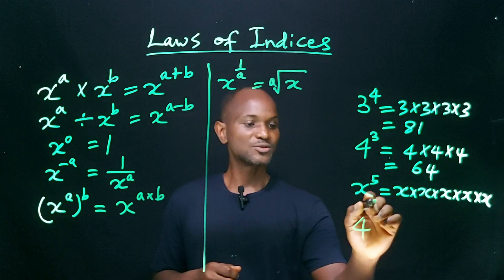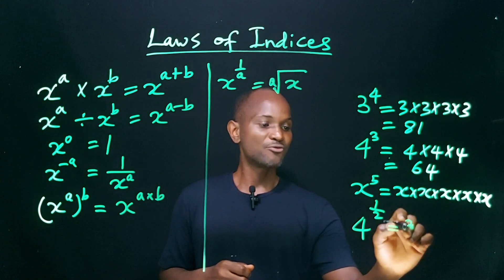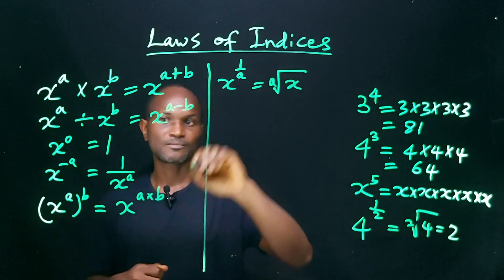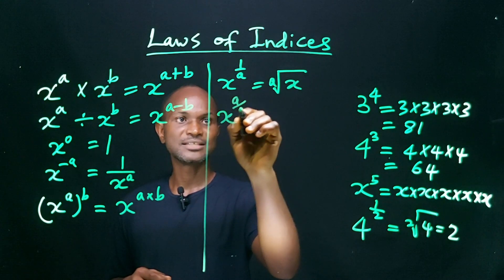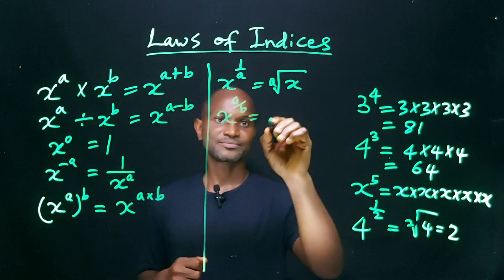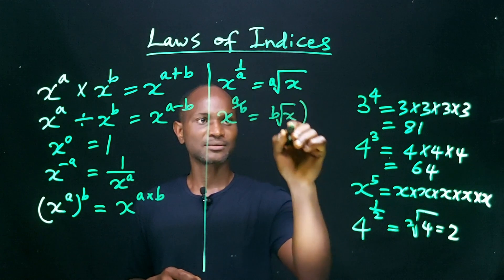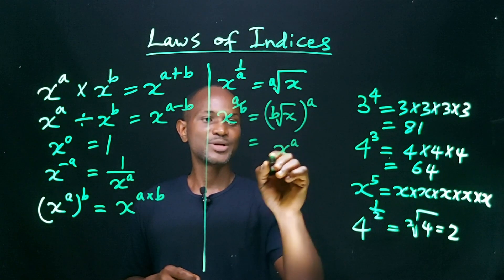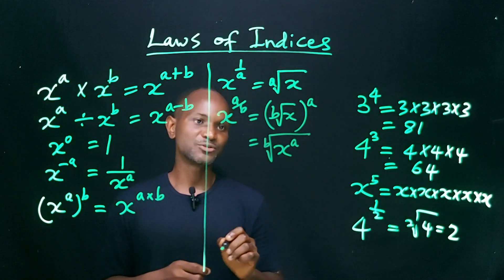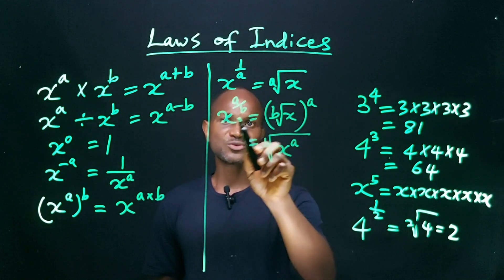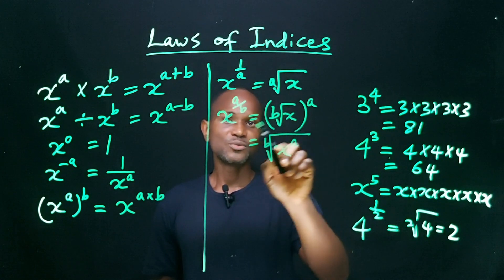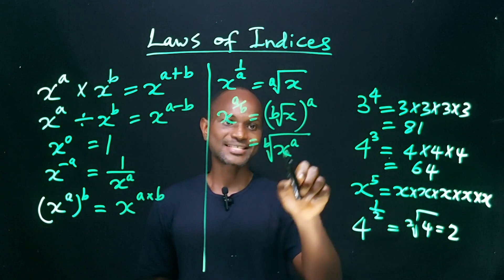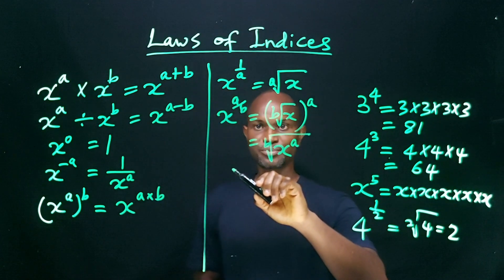For instance, 4 raised to power 1 over 2 is simply the square root of 4, which equals 2, because 2 times 2 is 4. We also have that any number raised to power a divided by b is equal to the b-th root of that number raised to power a. This is also equal to that number raised to power a, then take the b-th root. The order in which we execute this does not matter — we can first take the b-th root of x before raising to power a, or raise x to power a before taking the b-th root.